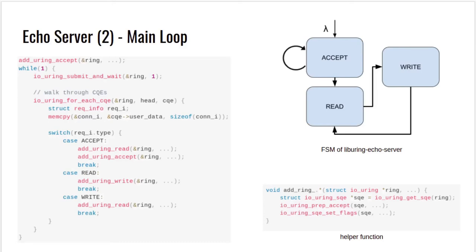After initialization, execution jumps into the main loop. The main loop is designed as a finite state machine. The initial step is accept, which is added outside the while loop. Entering the while loop, it will first submit all batched requests on the submission queue, then walk through all events on the completion queue. Depending on the type of event, we can decide what the next operation should be and add it as a new event to the submission queue. For example, from the server perspective, if the previous system call is read, it must perform a write operation because it needs to echo the content obtained from the read. The final state machine of the echo server is depicted on the top right corner.